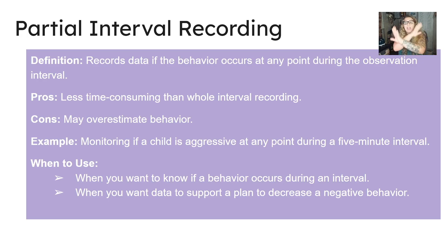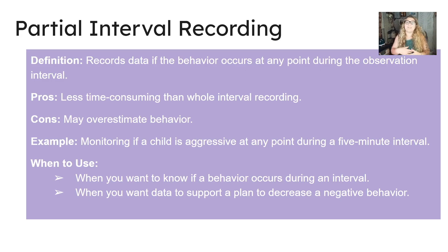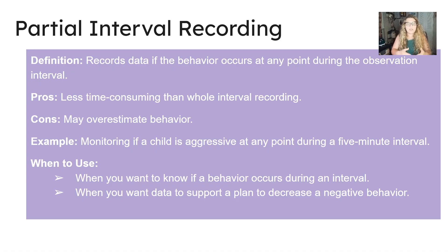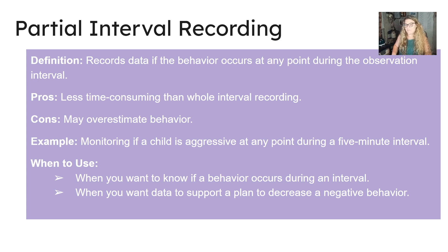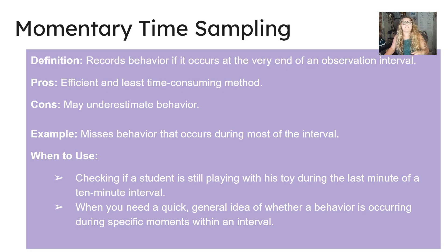Partial interval recording records data if the behavior occurs at any point during the observation interval. The pros are that it's less time-consuming than whole interval recording, but the cons are that it may overestimate behavior. An example is monitoring if a child is aggressive at any point during a five-minute interval. Use this when you want to know if a behavior occurs at all during an interval or when you want data to support a plan to decrease a negative behavior.